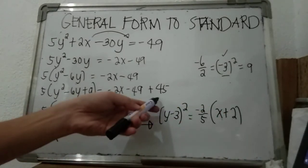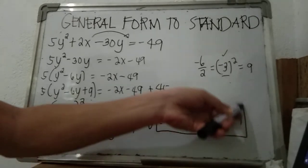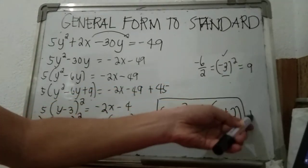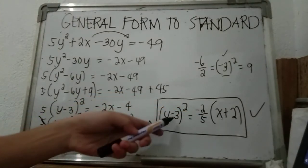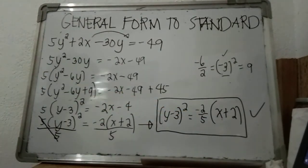So this is our standard form equation of the parabola, having the center (negative 2, positive 3). Thank you for watching.